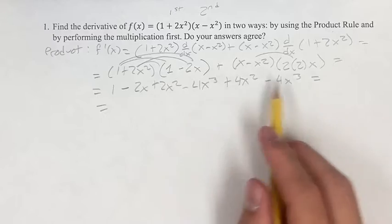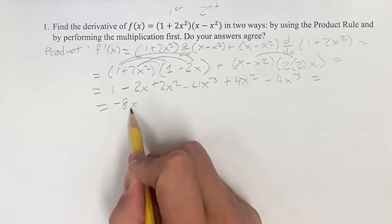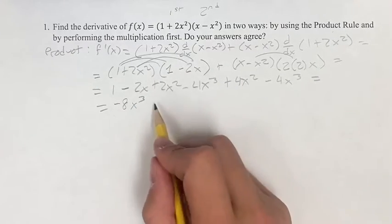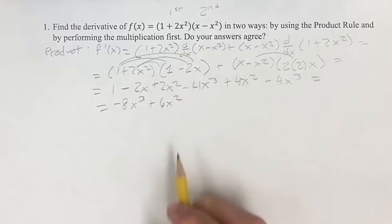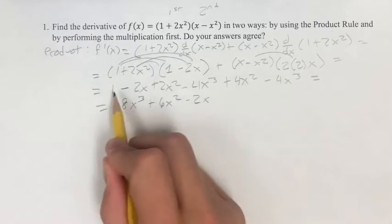Simplifying this, we have -4x³ minus 4x³, which is -8x³, plus 2x² plus 4x² is 6x², minus 2x, plus 1.